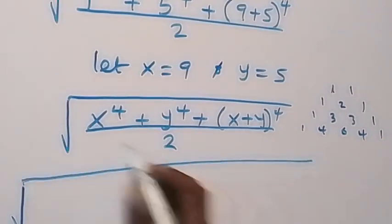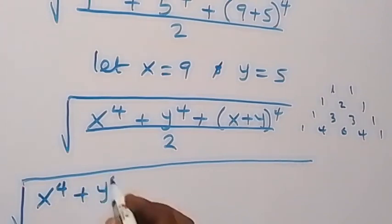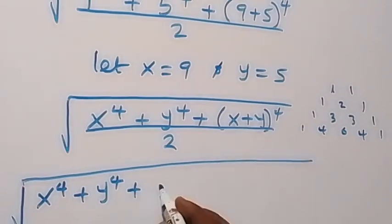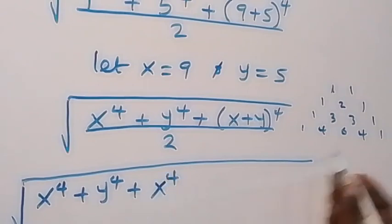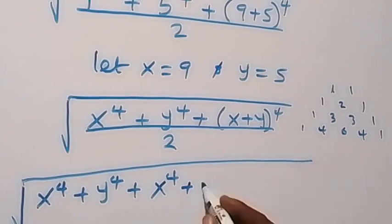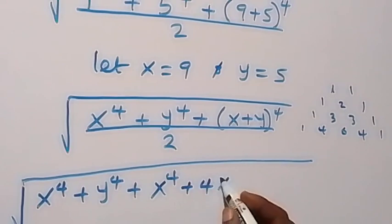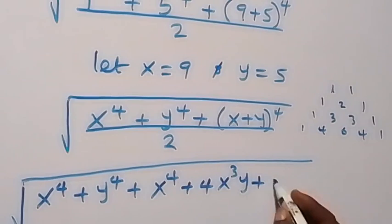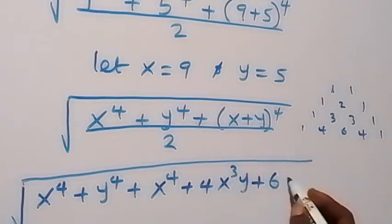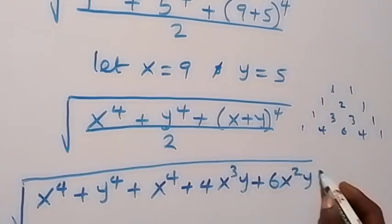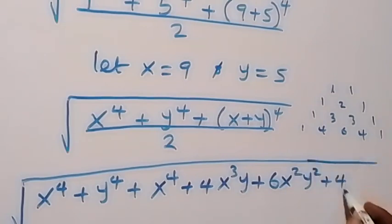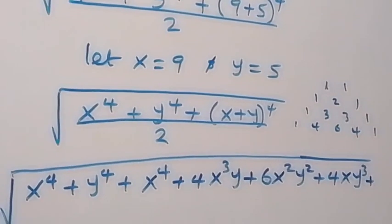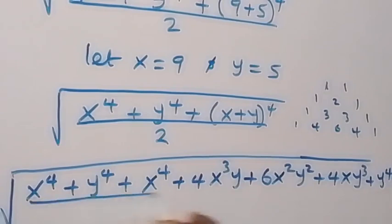What we have here is x raised to power 4 plus y raised to power 4, then plus the first term with coefficient 1: x raised to power 4; then plus the next with coefficient 4: x raised to power 3 times y; then plus coefficient 6: x squared times y squared; then plus coefficient 4: x times y cubed; then plus coefficient 1: y raised to power 4; then over 2.